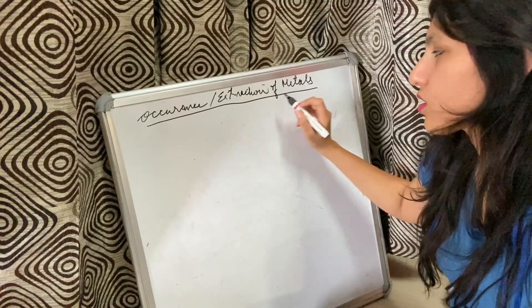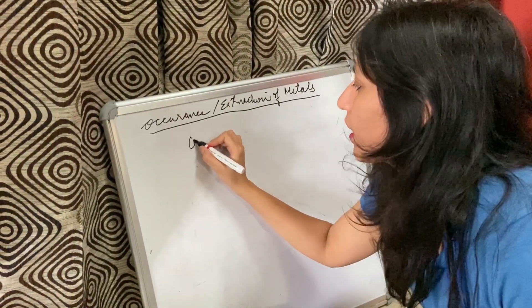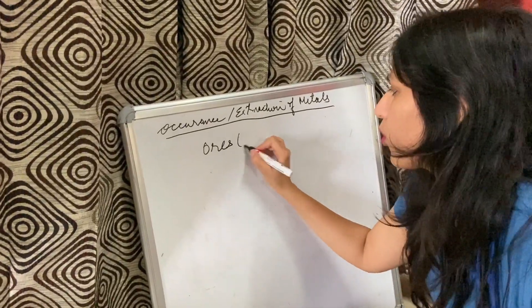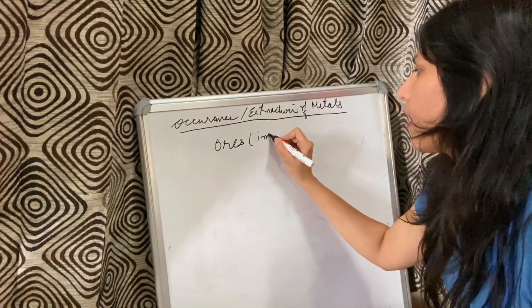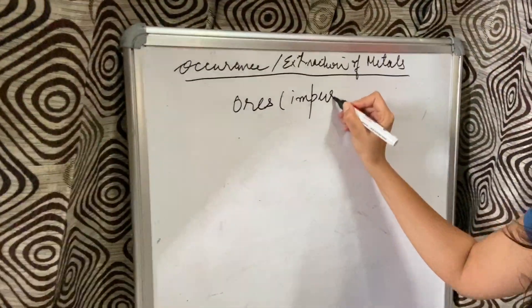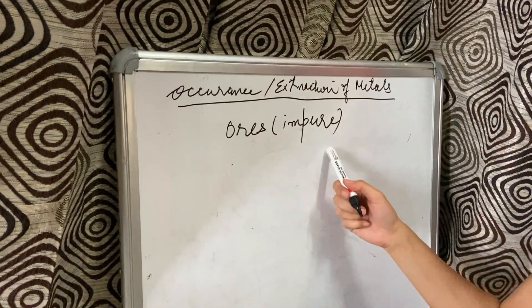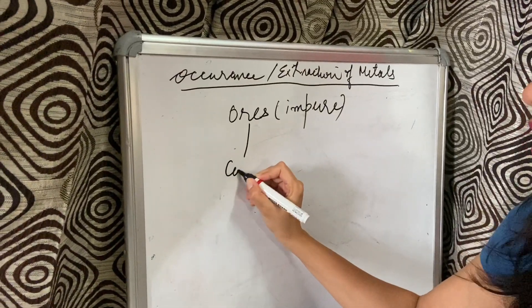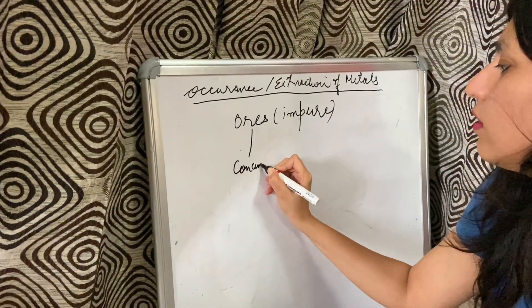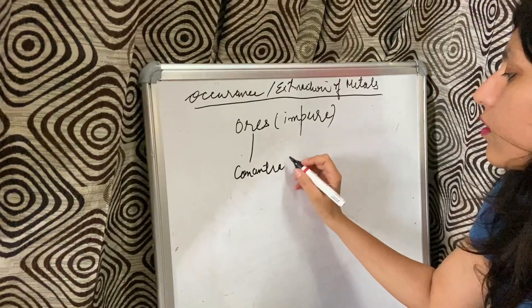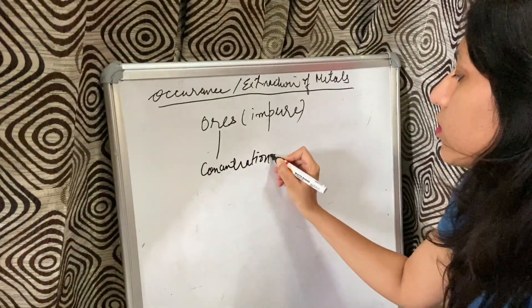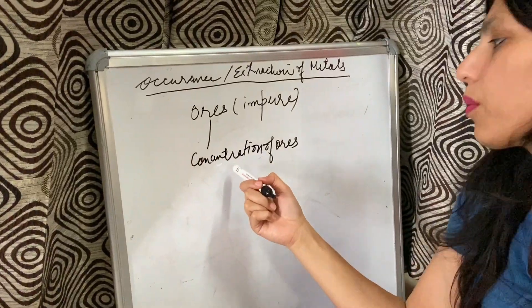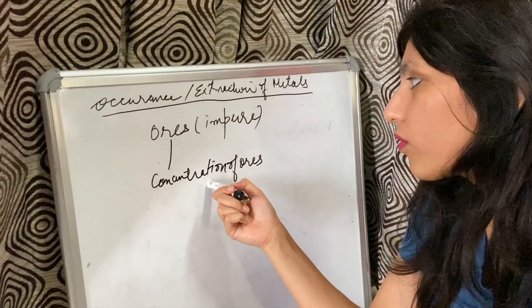Let's start with the extraction of metals now. We will take any of the ores or any metal. You will know that the ores are impure forms — they are impure forms.